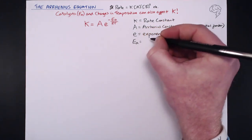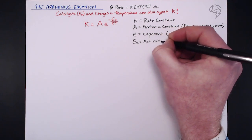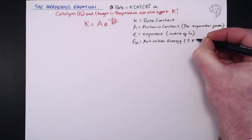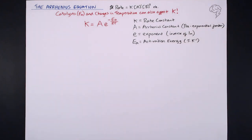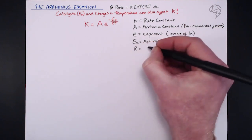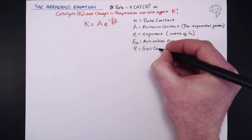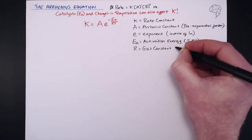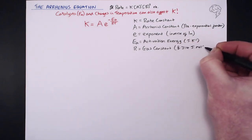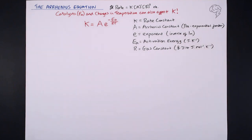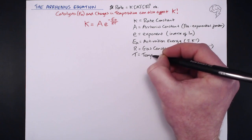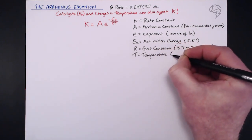Ea we've seen before in rates — that's basically our activation energy. We know that the lower the activation energy, the easier it is for a reaction to occur, and the faster the rate of reaction. R is our universal gas constant — it's on our data sheet at 8.314 joules per mole per Kelvin. And T, of course, stands for temperature, but that is in Kelvin.